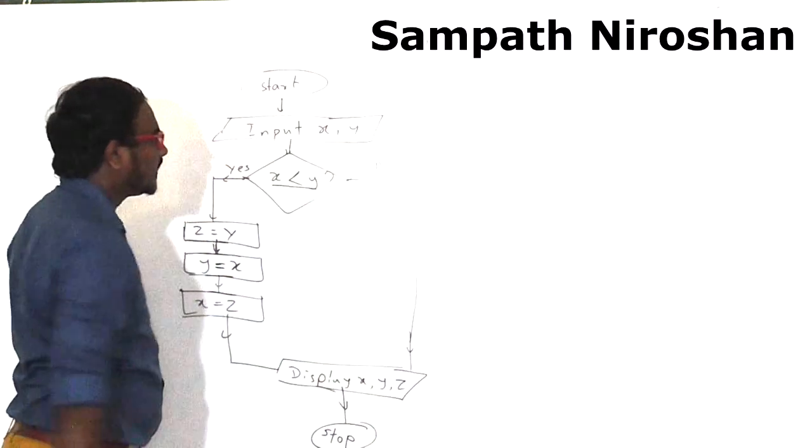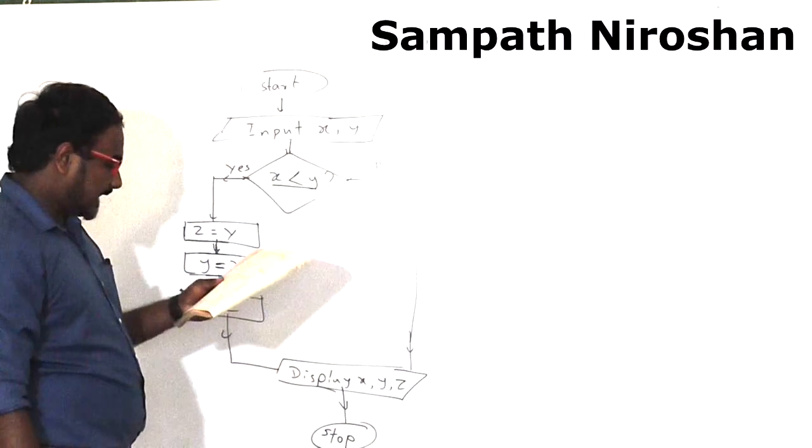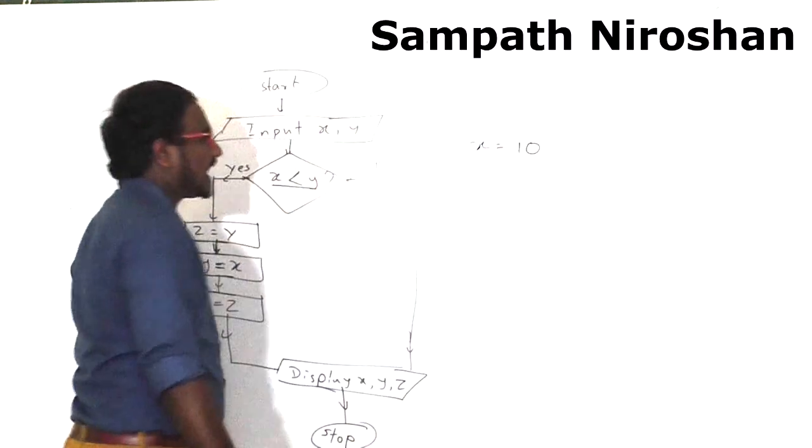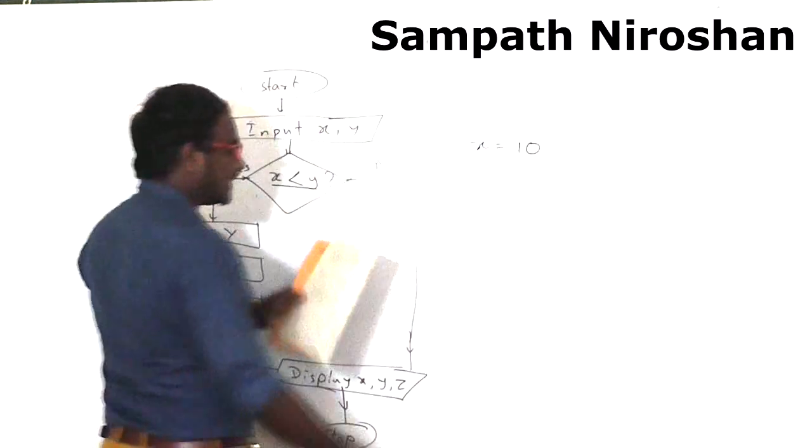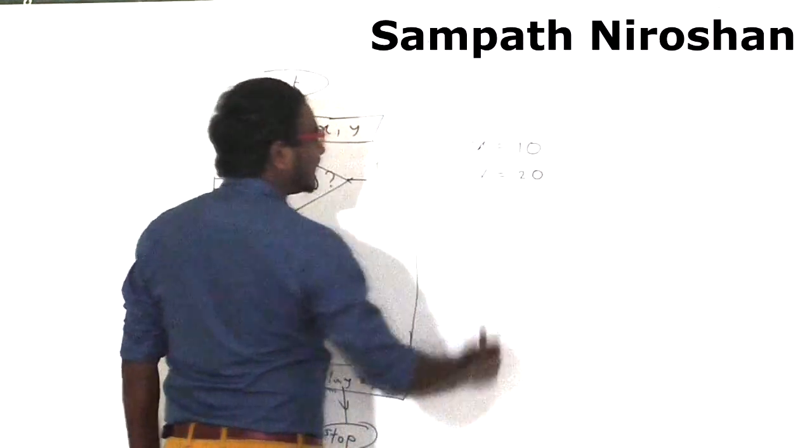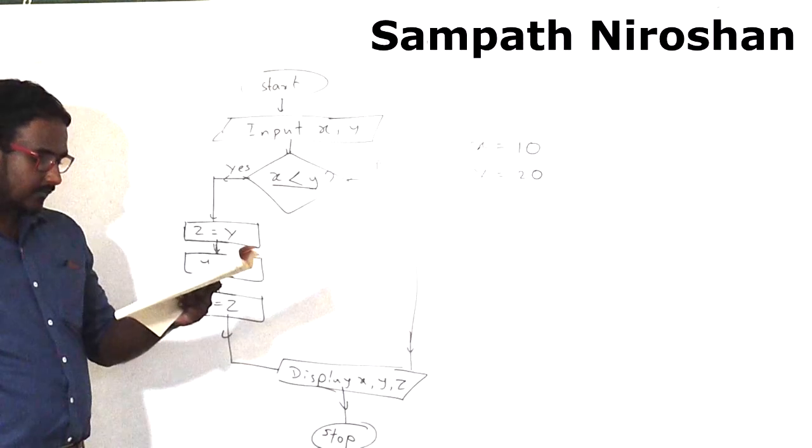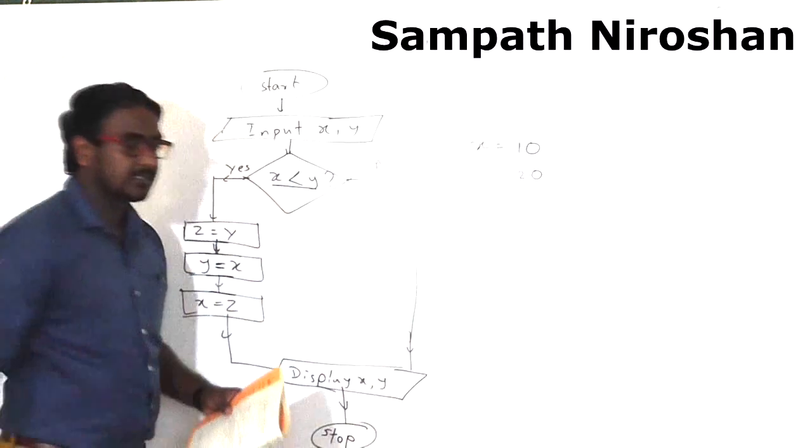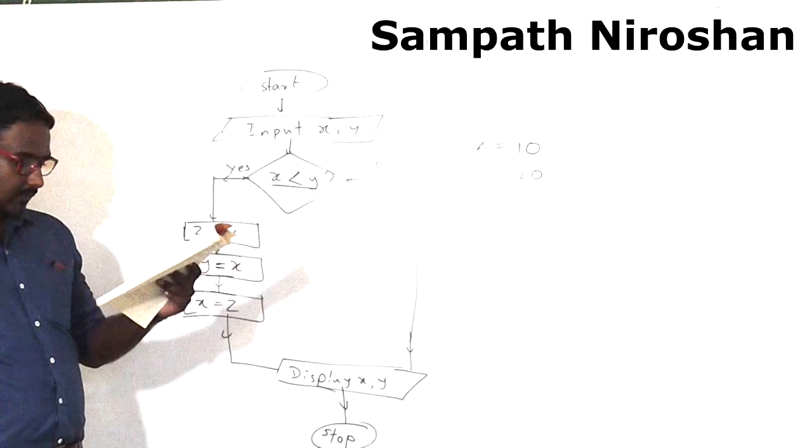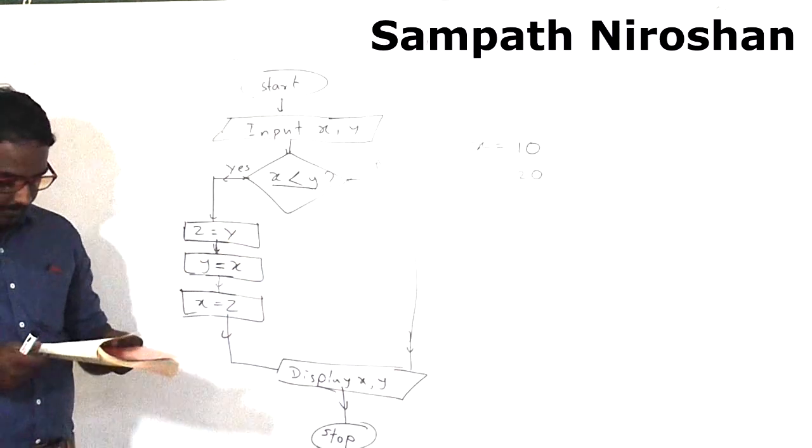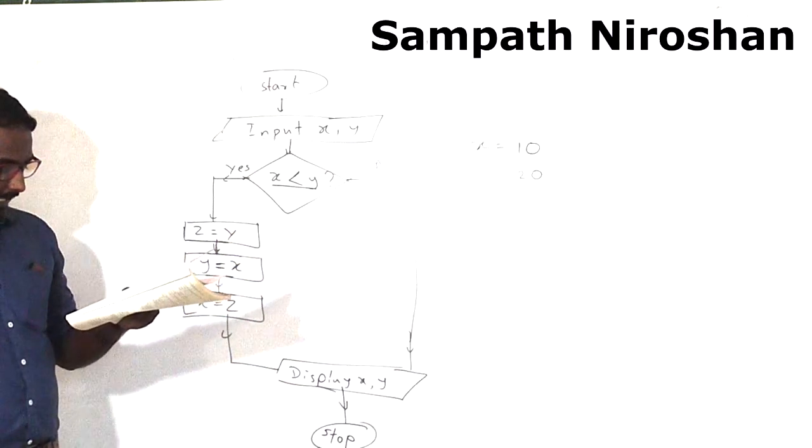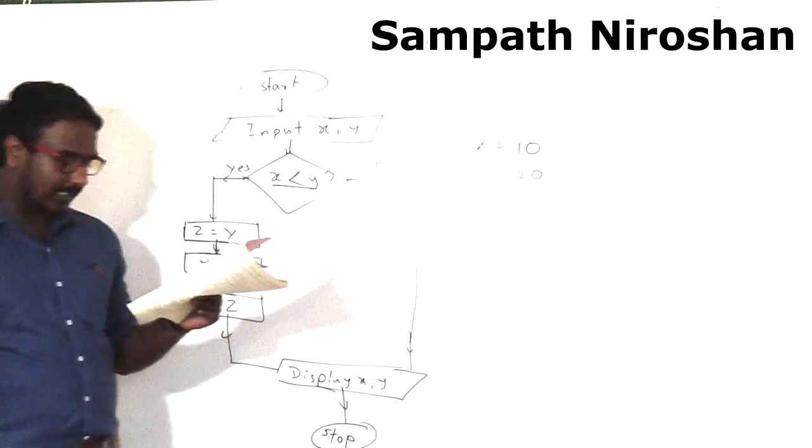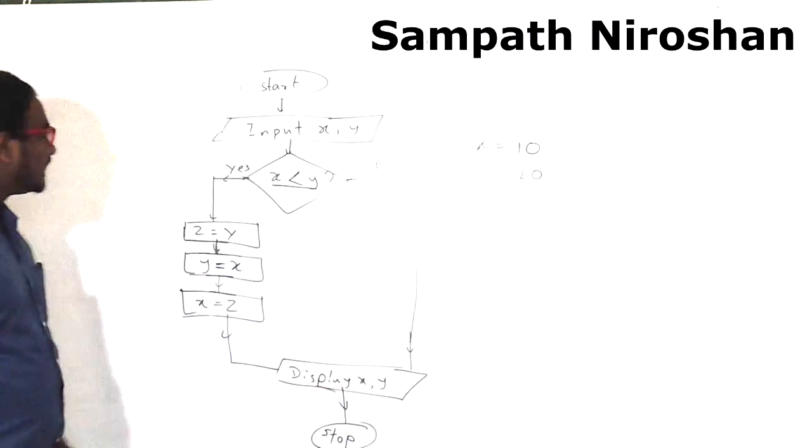They are saying x is 10, the value they are entering as x is 10, the value they are entering as y is 20. So what values will be displayed for x, y respectively? There's no z, only two variables. So in the last answer you don't have anything either. What values will be displayed for x and y respectively if the inputs are x equals 10 and y equals 20 for the given flowchart?